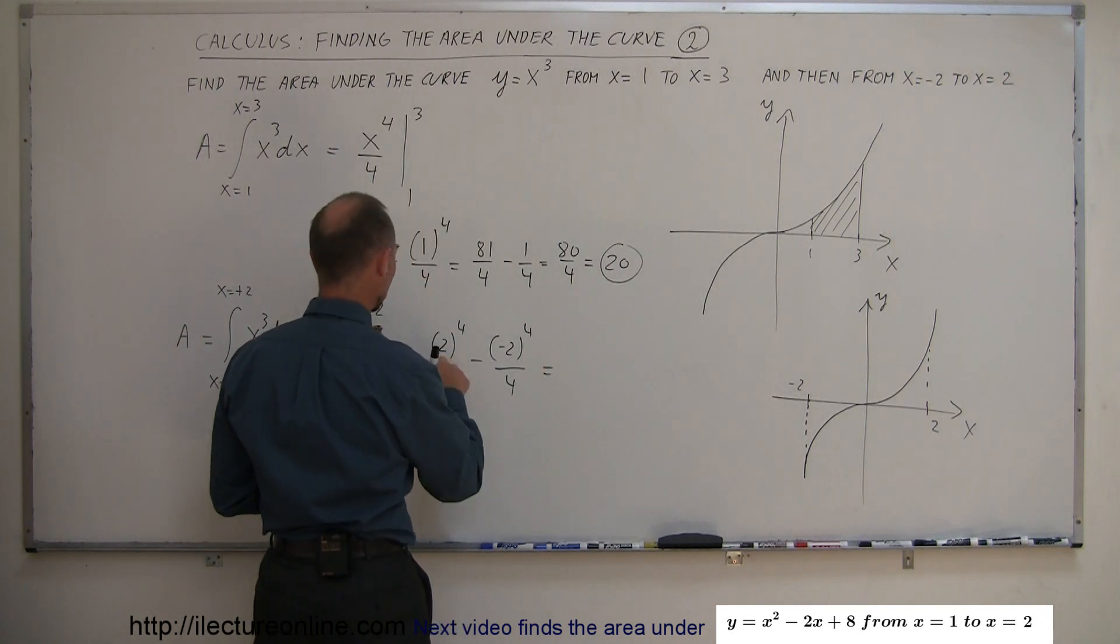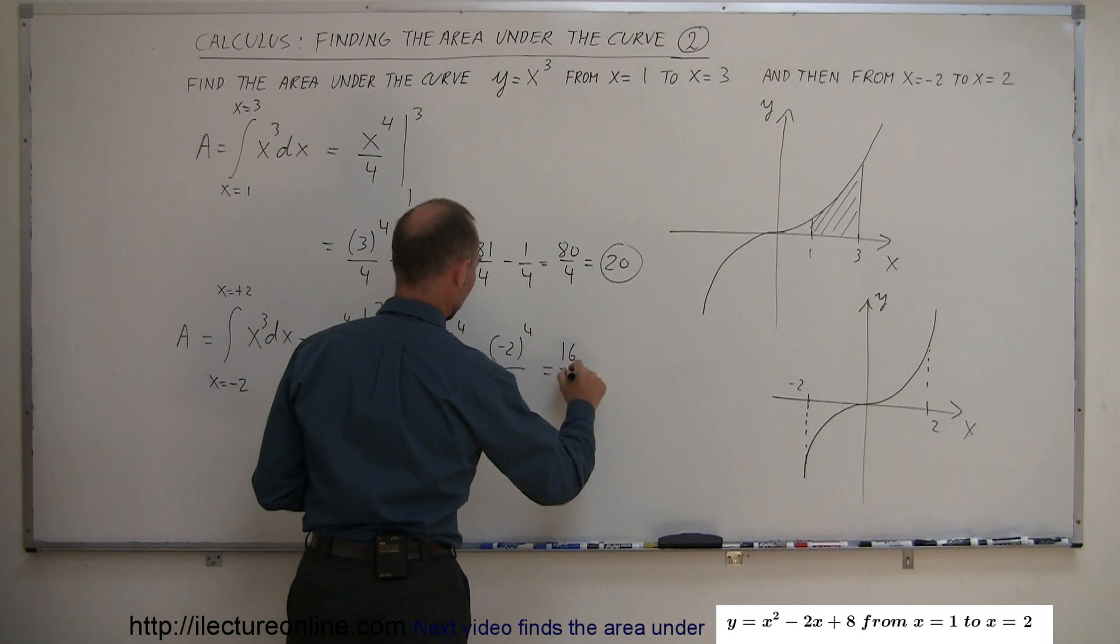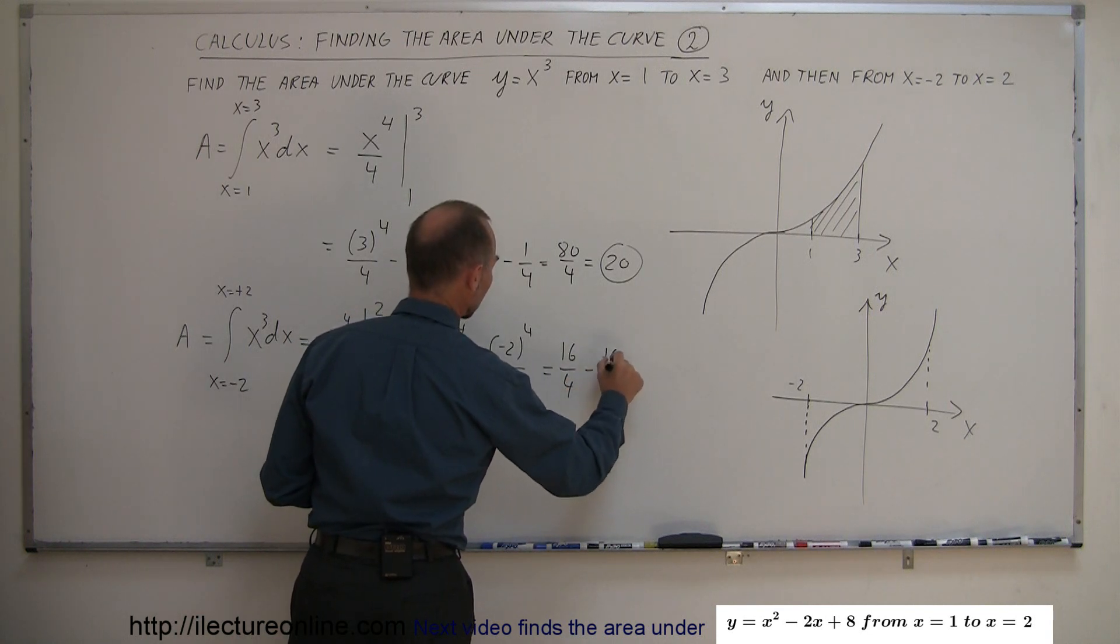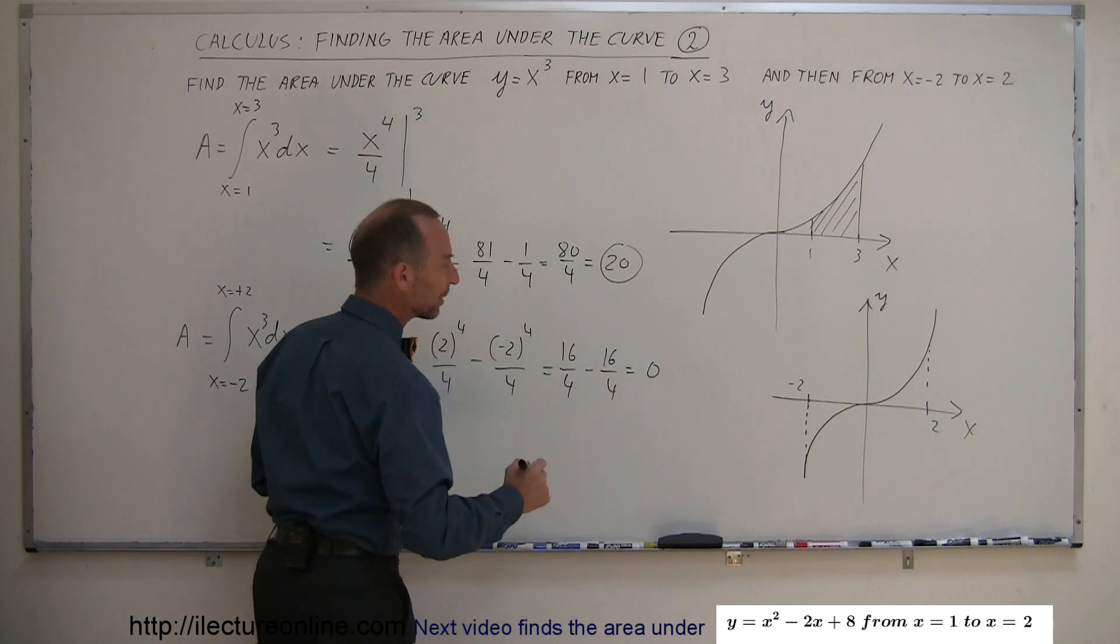This becomes 2 to the fourth power is 16, that's 16 over 4 minus 16 over 4, which is 0, just like we predicted.